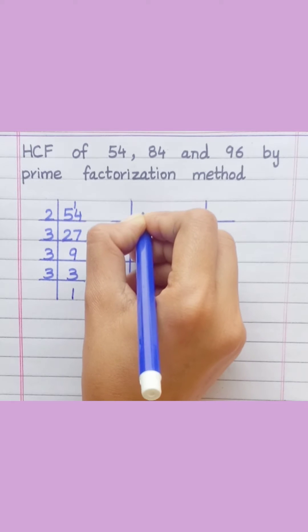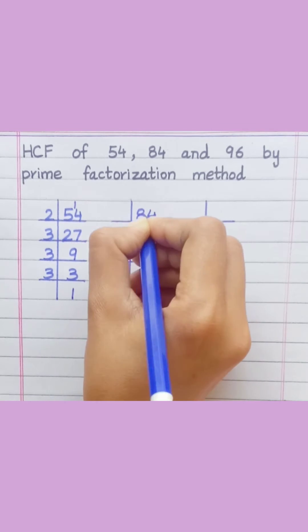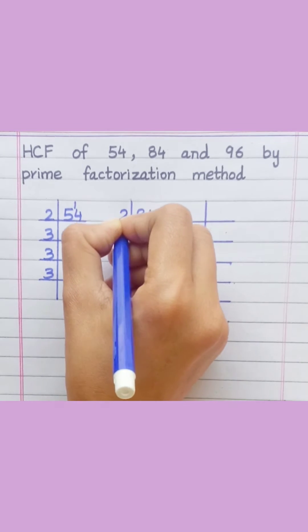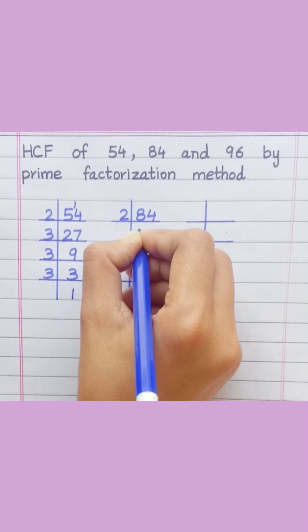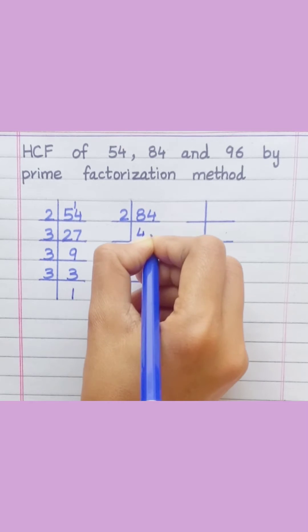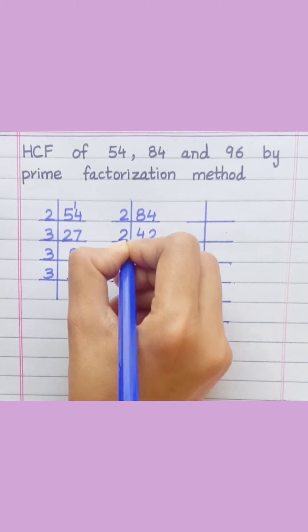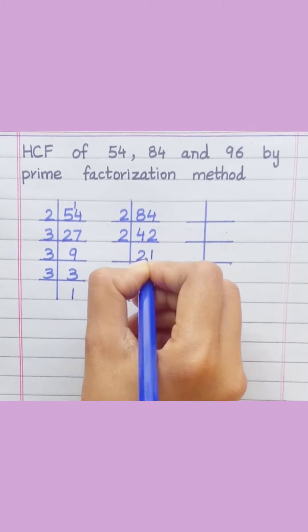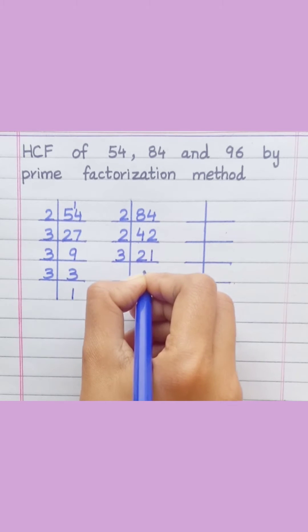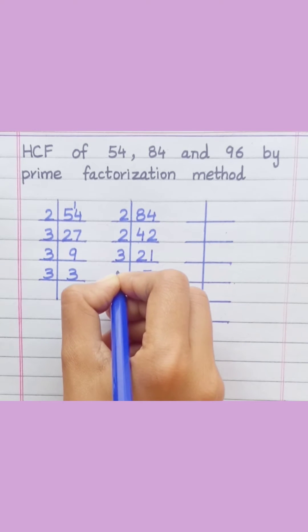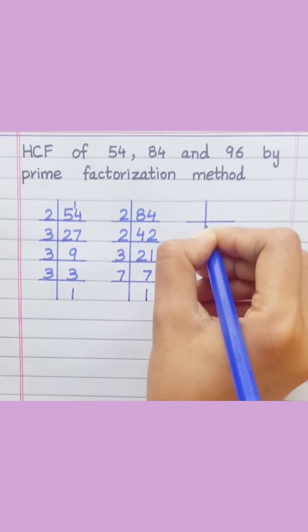84: 2 fours are 8, 2 twos are 4, 2 twos are 4, 2 ones are 2, 3 sevens are 21, 7 ones are 7.